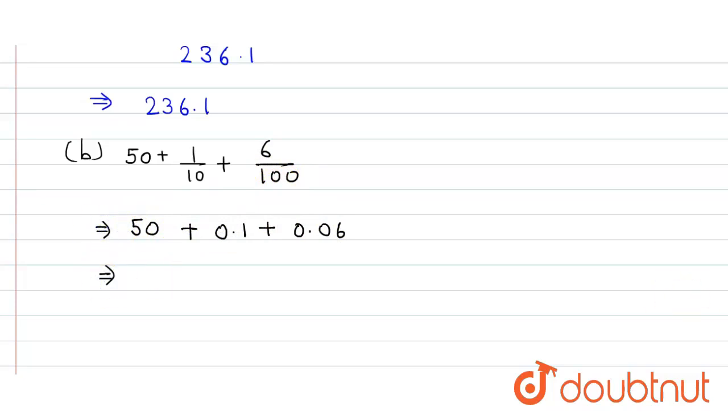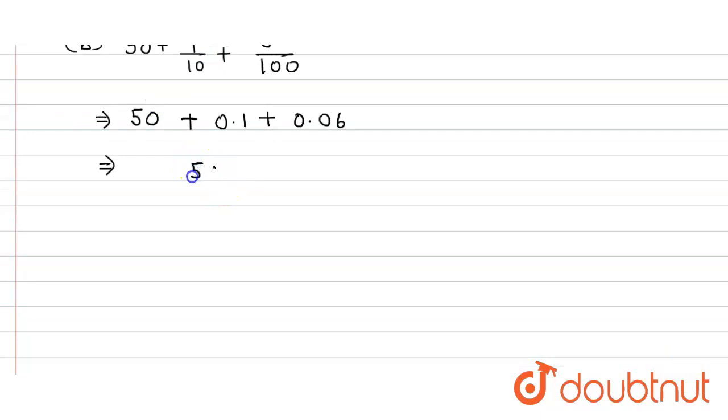So here now we add them. So here we get 50.00 because there are 2 digits after the decimal so we take 2 zeros. So here it is 0.10 and here again it is 0.06. So 6 plus 0 plus 0 is 6 and here it will be 1 plus 0 and then 5. So here when we sum here we get 50.16.